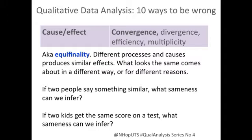Then we have a set of ways to be wrong to do with cause and effect. The one Stanley Schumm calls convergence is also to do with equifinality — the idea that different processes or causes, or in the social world, attitudes, beliefs, or actions, can produce similar effects. So what looks to us to be the same actually comes about because of different reasons, through a different causal mechanism. For example, if a headmaster and a student tell you the same thing about a school, what sameness can we infer? Is there really sameness in their experience? If a female leader and a male leader tell you the same thing, what kind of sameness can we assume? If two people score the same on a test, that's the same performance but not necessarily the same understanding.